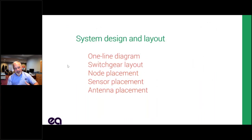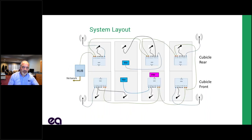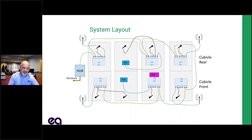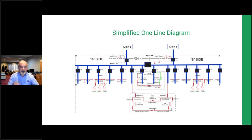So how do we design a system? Everything starts from a one-line diagram. We're going to draw a bird's-eye view showing both front and rear cubicles — the breakers in front and the cables in the rear. Where do we place the nodes? Where do we place the sensors? How do we run the cables? This is a simple four-cubicle example showing the typical sensors: every compartment has TEV and ultrasonic, with perimeter antennas and one environmental sensor. But in the real world, systems aren't always that simple.